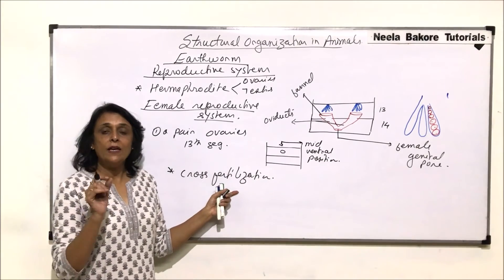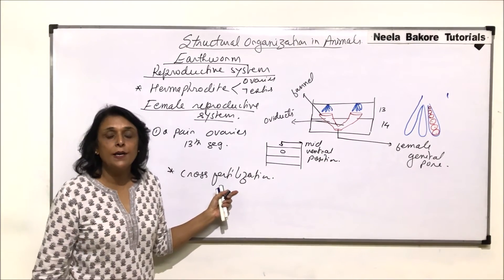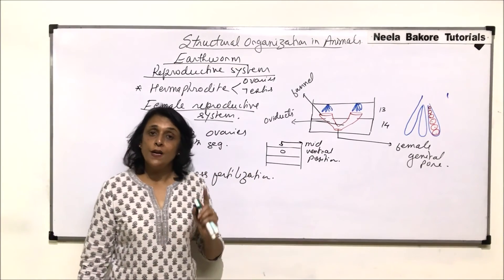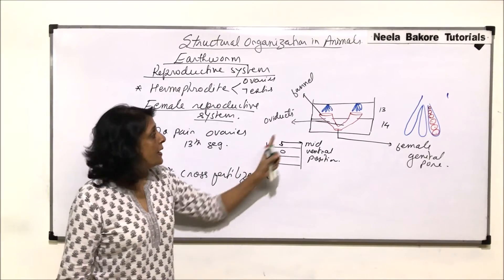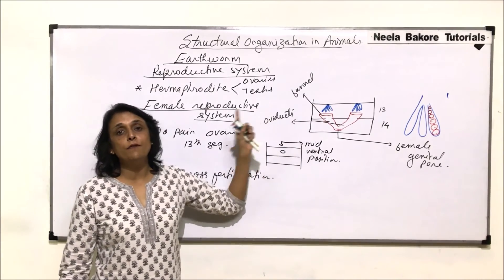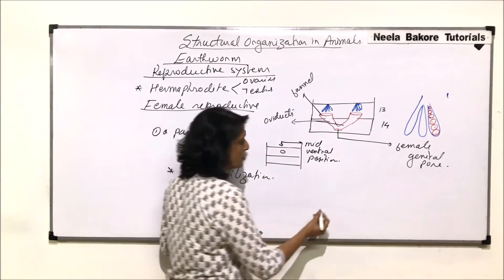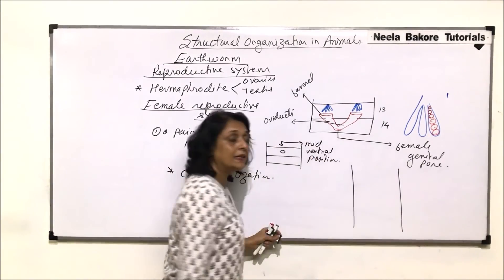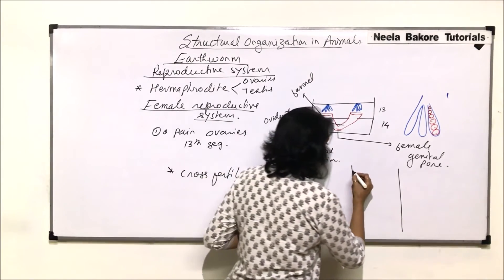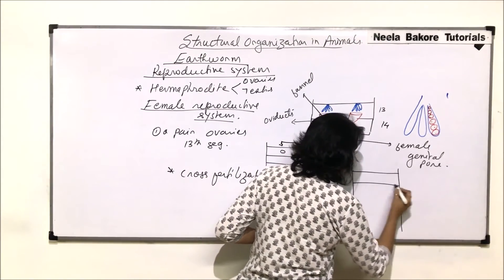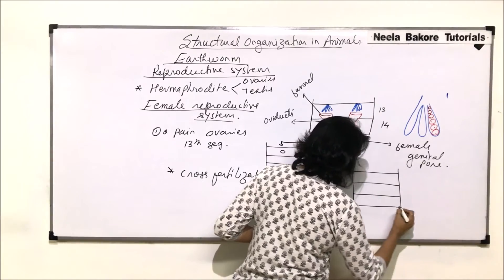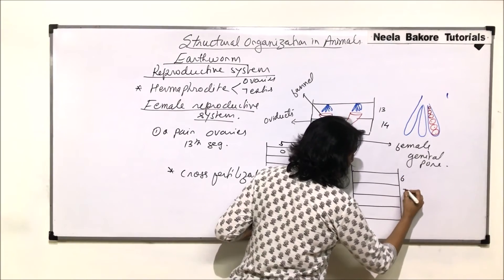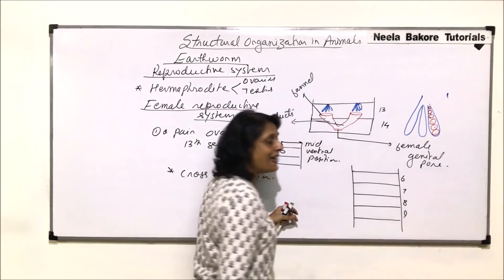One worm deposits its sperms into the spermathecae of the other worm. When we talk about the female reproductive system, we also talk about the segments where there are these paired spermathecae. These spermathecae are small sac-like structures, and they are four pairs present in sixth, seventh, eighth and ninth segments.